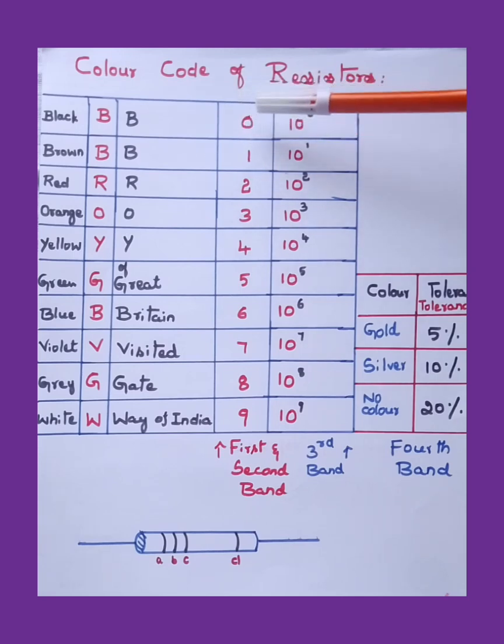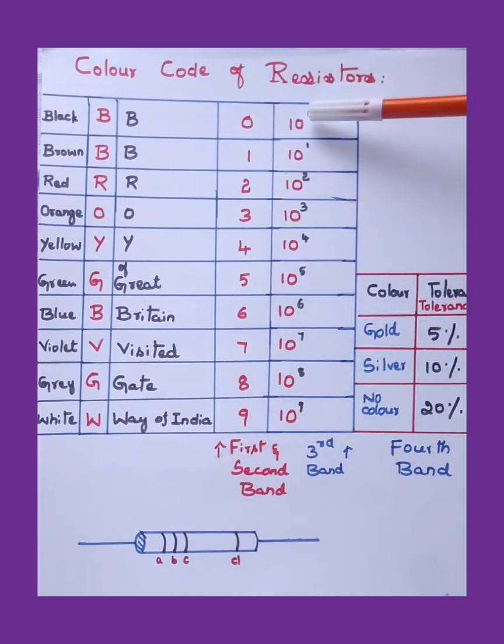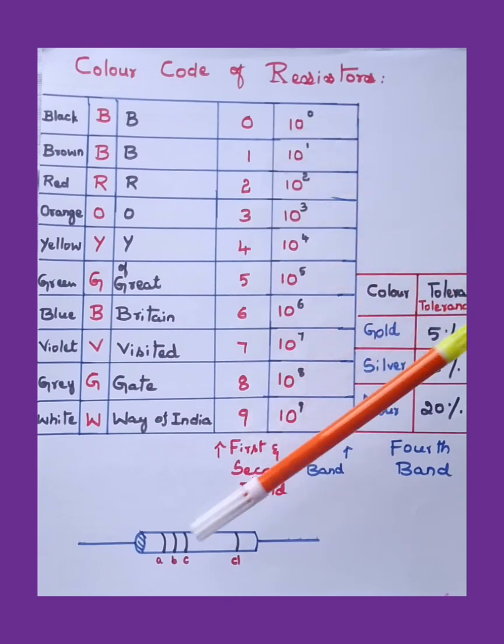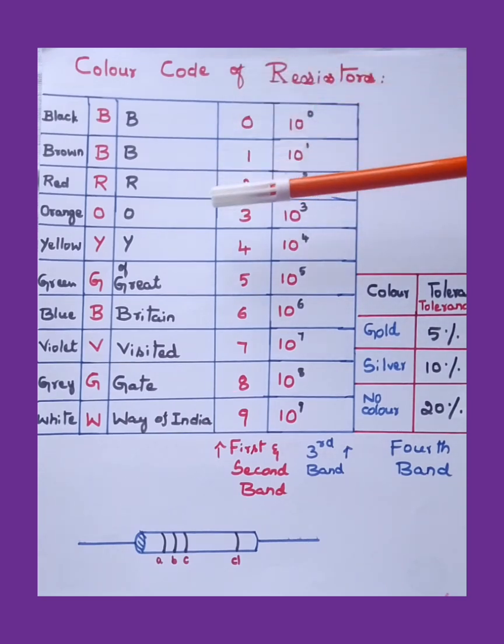The value of black is zero and it increases like this: brown is one, then goes for red two, orange three, etc. For white it is nine. This is the value of the resistors for the first and the second bands. And these values, multiples of 10, are for the third line which is mentioned. The values are like this: 10 to the power of 0, 10 to the power of 1, up to 10 to the power of 9.